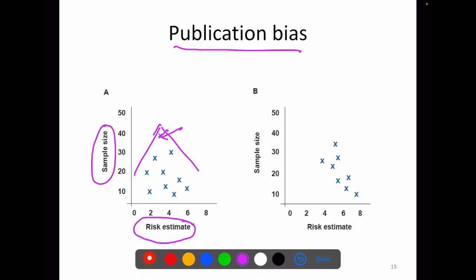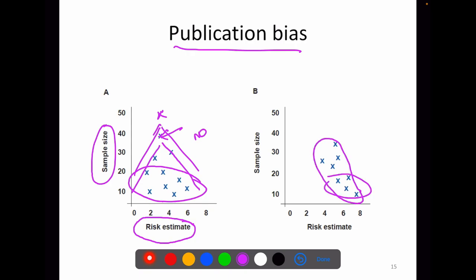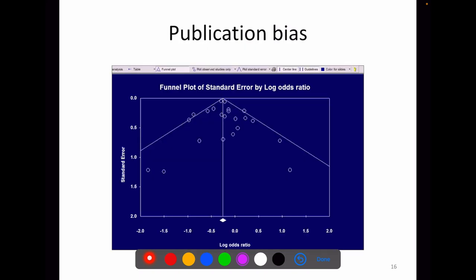The top point of the funnel plot is the risk estimate of the study with maximum sample size. If there is no publication bias, the studies will be equally divided on either side. If publication bias is present, only studies showing positive results with smaller sample size will be published, while studies with smaller sample sizes showing lower risk estimates remain unpublished, so the funnel does not appear symmetric. The absence of studies with smaller sample size on one side indicates publication bias. In the funnel plot, the risk estimate is on the x-axis and sample size or standard error is on the y-axis — naturally giving a funnel-shaped appearance, and if publication bias is present there will be absence of studies with negative results.